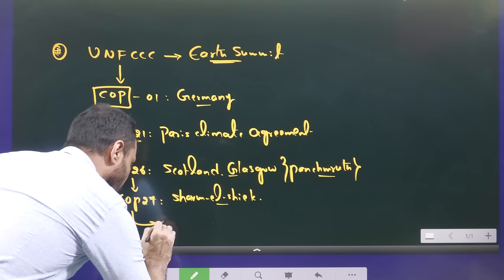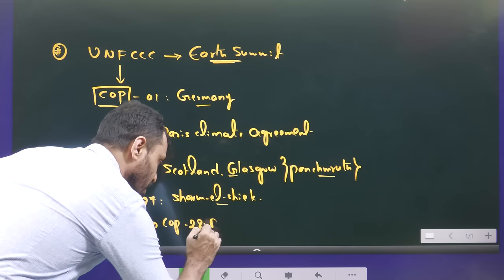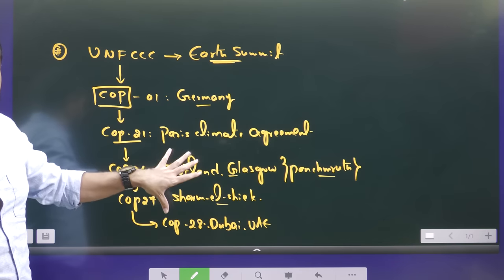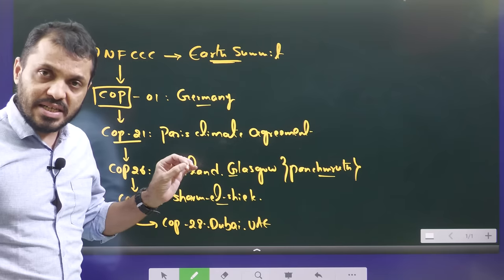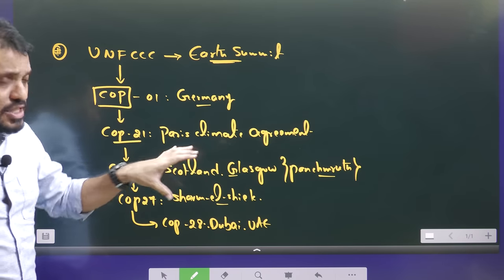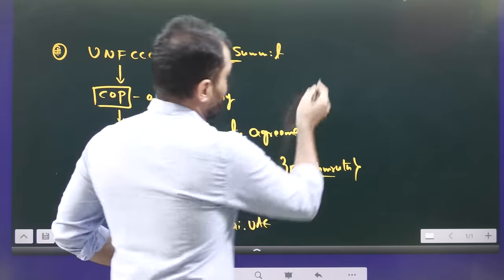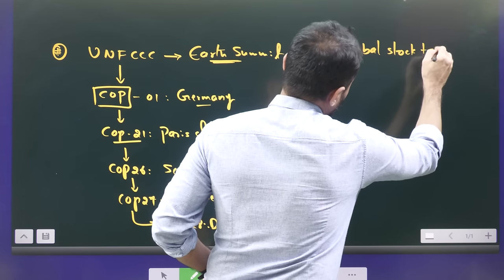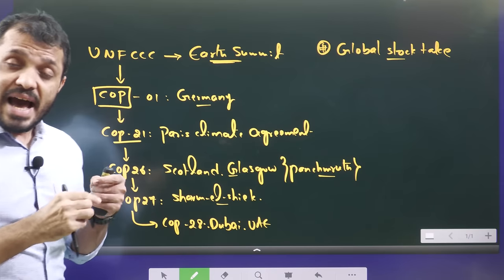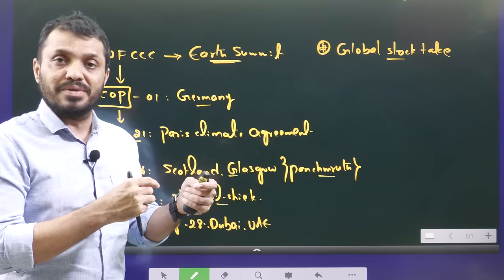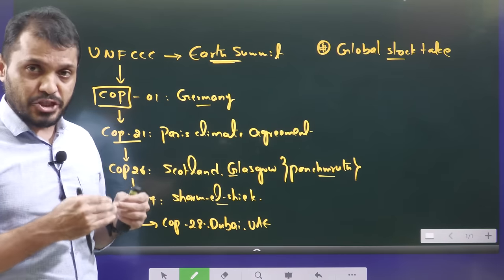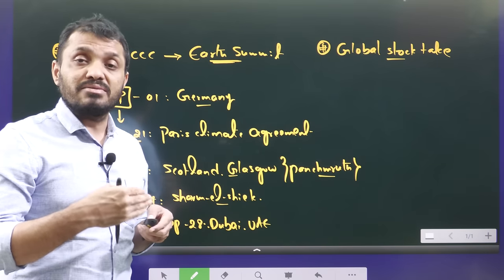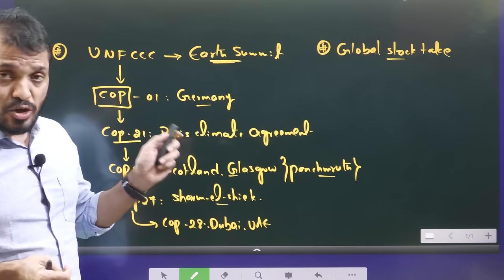We are now discussing the COP28 summit, which was held recently in Dubai, UAE. This is the short journey about the COP meetings, which are always conducted under the guidelines of UNFCCC. A key term to understand is the Global Stock Take — an assessment mechanism which assesses our progress towards climate action. It checks various countries' performance in terms of funding or commitment to their targets.